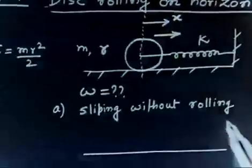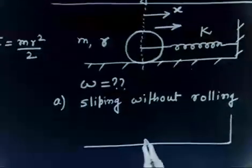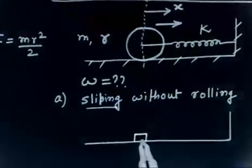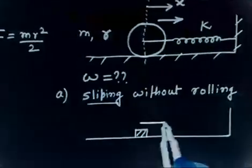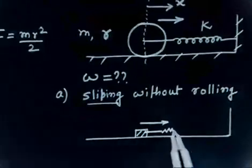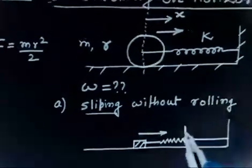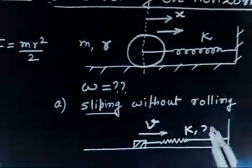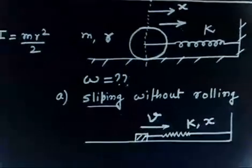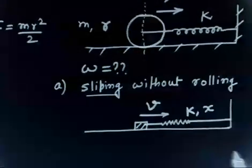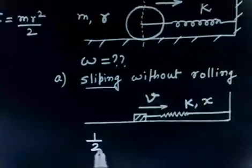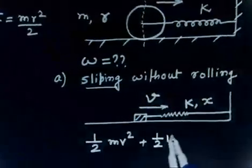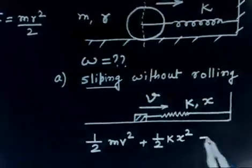So the cylinder slipping without rolling will look like a point mass moving in this direction. Let us say this is a spring with spring constant K; the mass has velocity V and the spring is stretched by distance X. Now I will apply the energy method. The total energy is ½MV² plus ½KX², and that has to be constant.